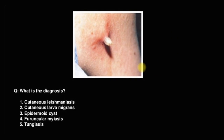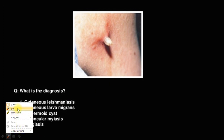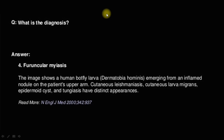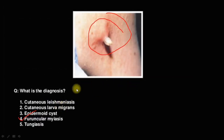What is the diagnosis of this picture? Options include cutaneous leishmaniasis, cutaneous larva migrans, epidermoid cyst, furuncular myiasis, and tinea. The answer is furuncular myiasis. This is a picture of a human botfly larva emerging from the skin — called Dermatobia hominis — emerging from an inflamed nodule on the patient's upper arm. Cutaneous leishmaniasis and larva migrans have other distinguishing features.